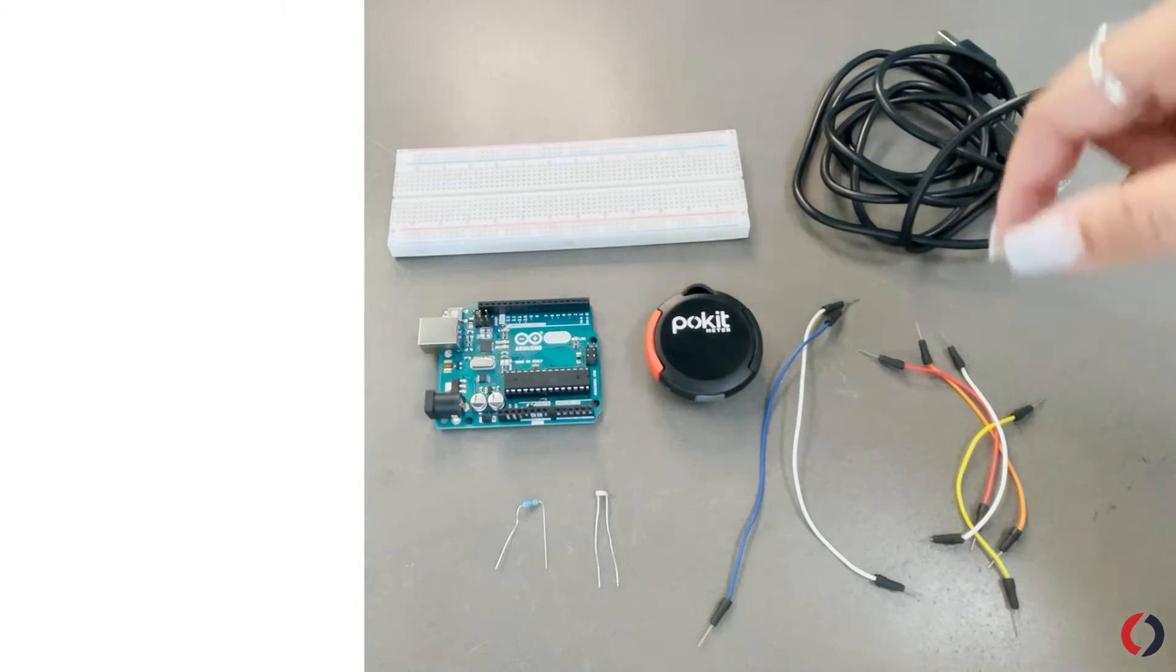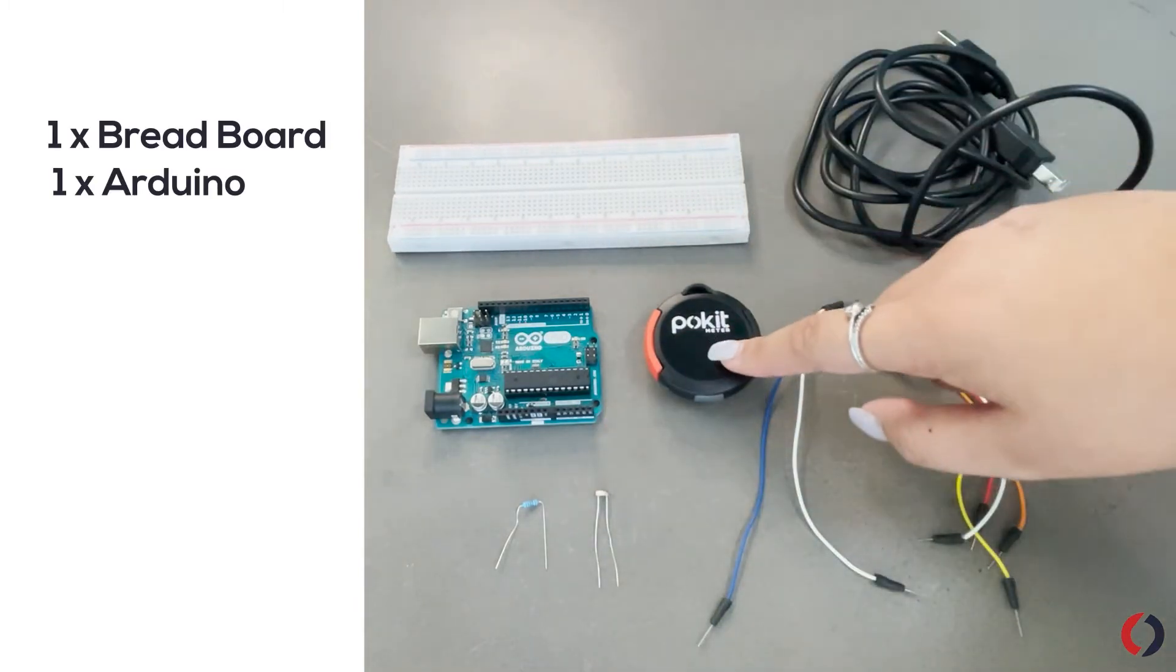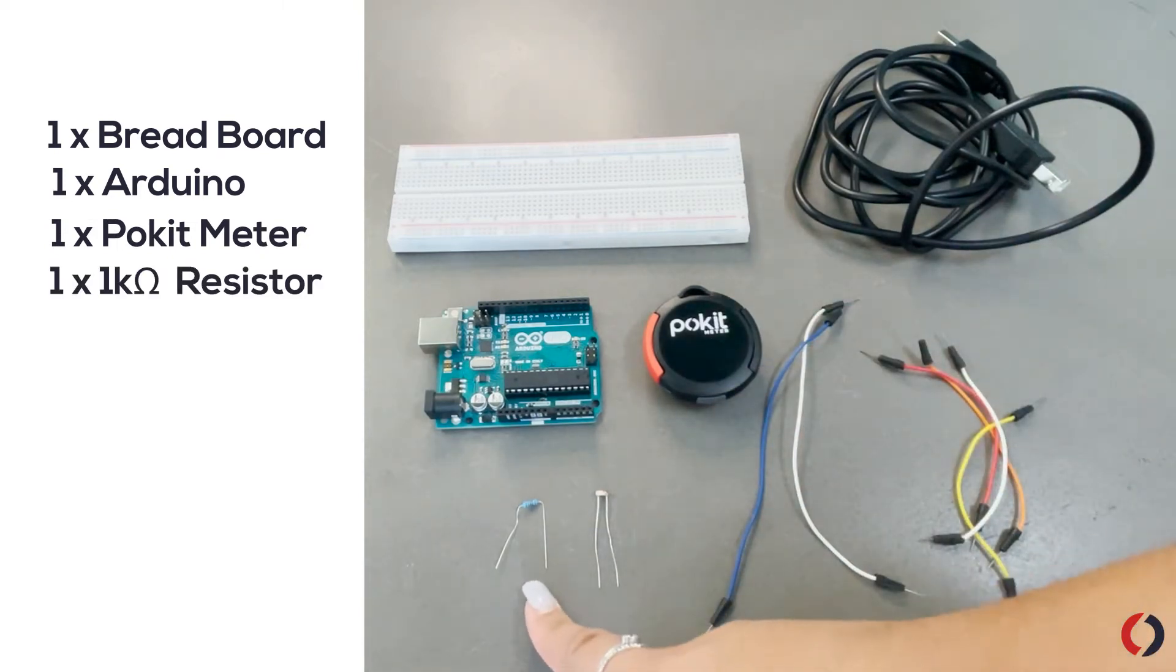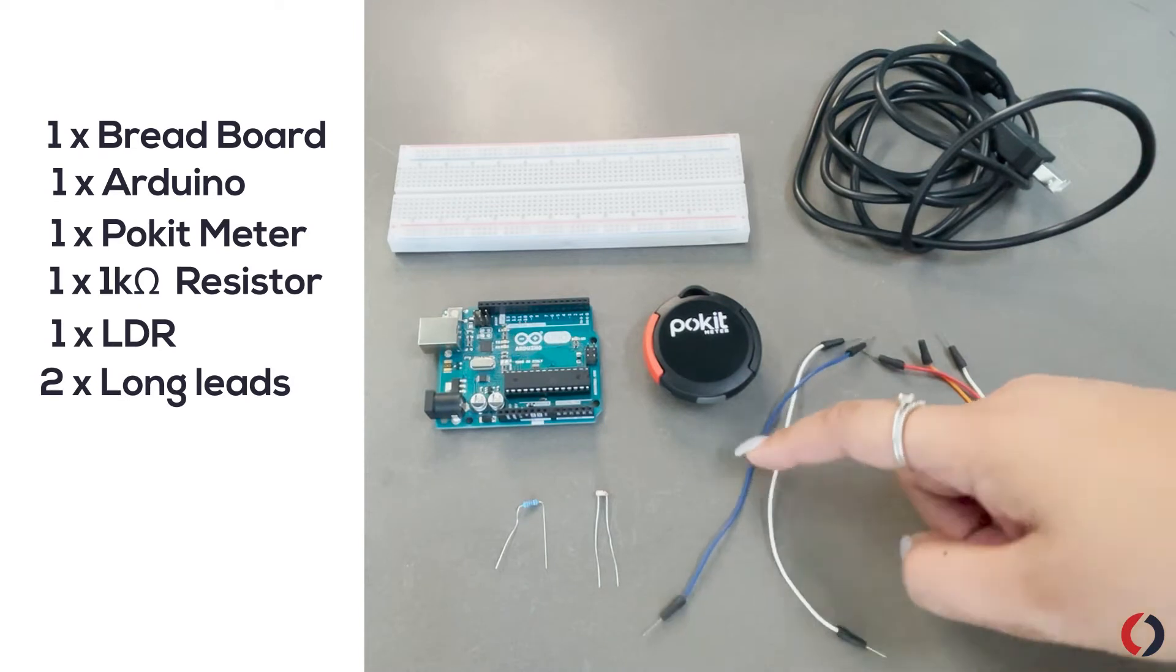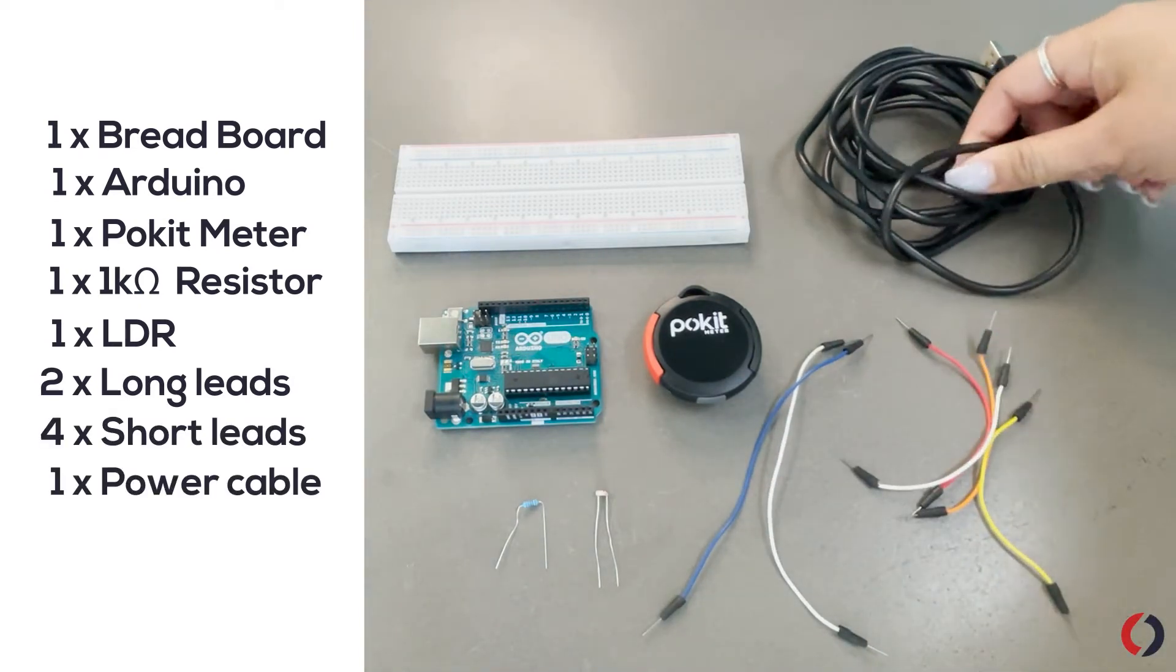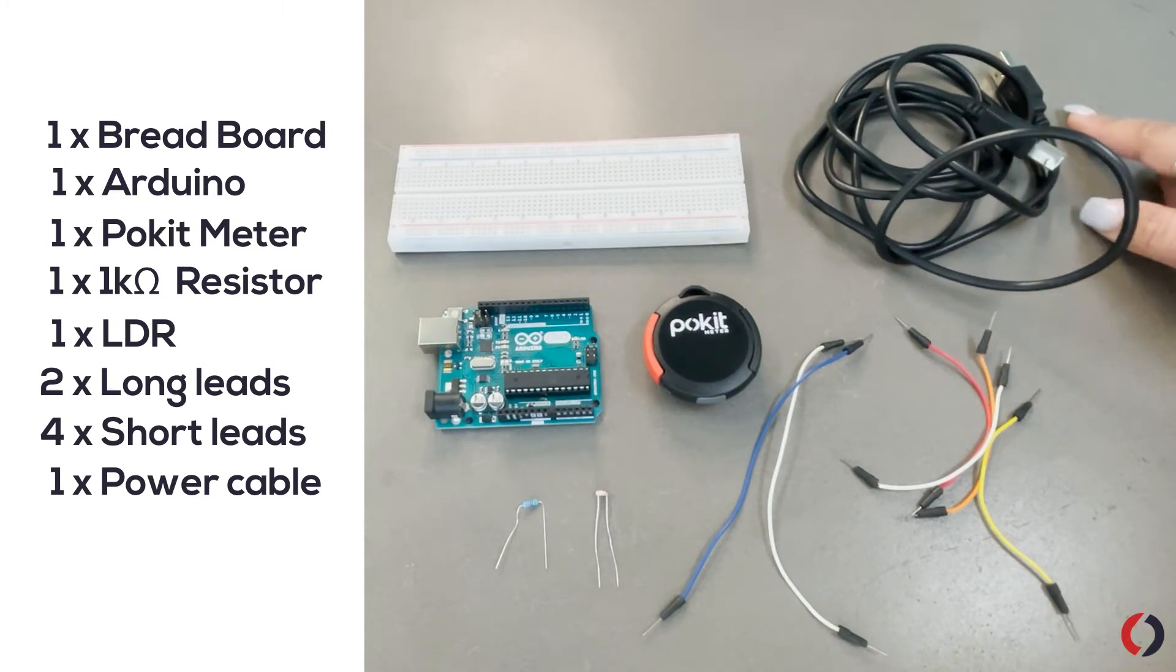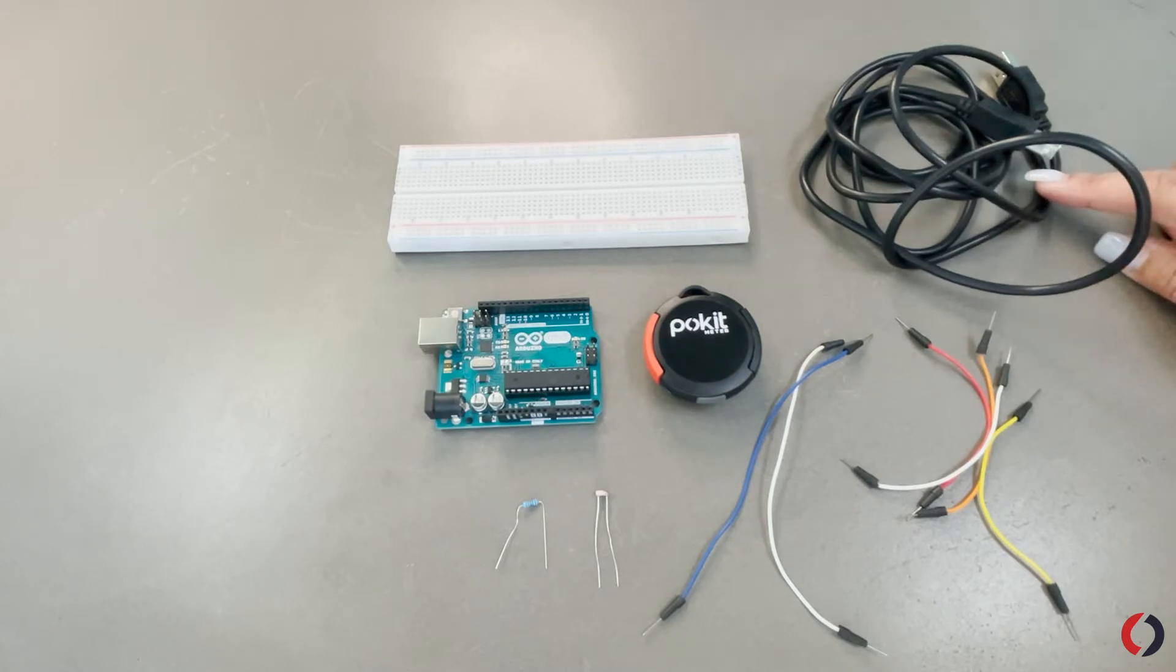So we'll start by going through everything you need. First you'll have your breadboard, your Arduino, obviously your pocket meter to log the data. Then this is a 1K ohm resistor. This is the LDR sensor, so it's a light dependent resistor. Then you have your two longer cables and four shorter cables and obviously the cable for your power supply. Usually I connect this to an adapter and just plug it into the wall, but you can also plug it into a laptop, whatever you prefer.